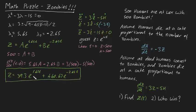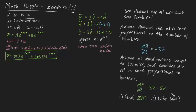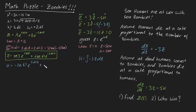Now let's find an expression for the number of humans as a function of time as well. H can be easily found as the integral of minus 3Z dt — we just integrate Z with respect to time and multiply by minus 3. If you do that, you get H equals minus 20.87 e to the 5.65t plus 520.87 e to the minus 2.65t.